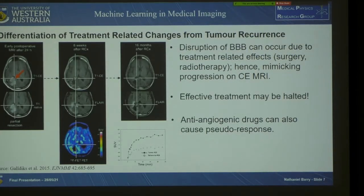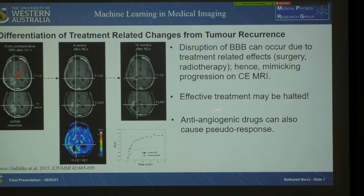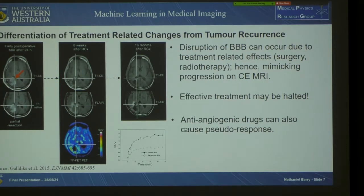Most importantly, FET PET is able to differentiate tumour-related changes from tumour recurrence. Contrast enhancement on MRI requires a disruption of the blood-brain barrier, which is usually caused by rapid cell proliferation from an aggressive tumour. This can cause mimicking on MRI since treatment-related effects such as surgery and radiotherapy can also cause disruption of the blood-brain barrier. This has been termed pseudoprogression in the literature, which can cause effective treatment to be halted — which we really don't want for high mortality cancers.